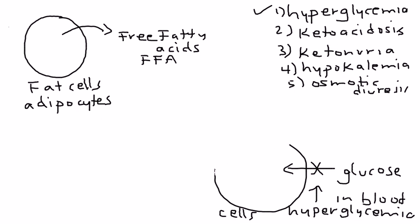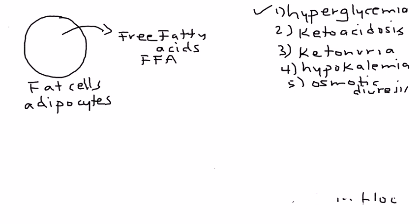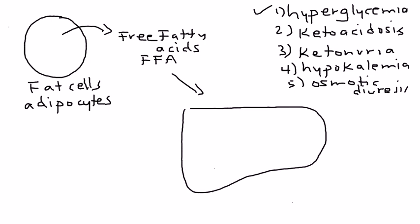And the free fatty acids then enter the bloodstream. And that is the beginning of the process, alternative process, of producing energy, a source of energy. The free fatty acids then go to the liver. And the liver then takes these free fatty acids and converts it to ketones. And that's an extremely important part of diabetic ketoacidosis.